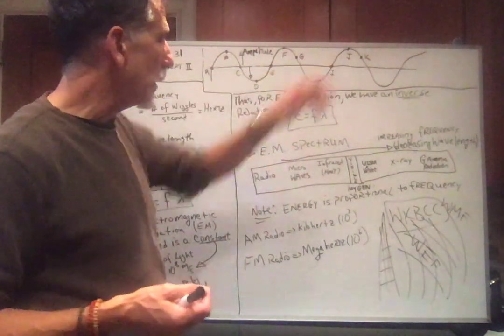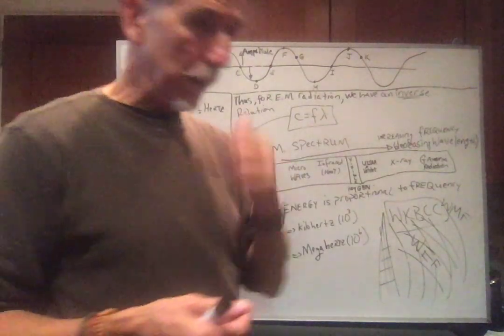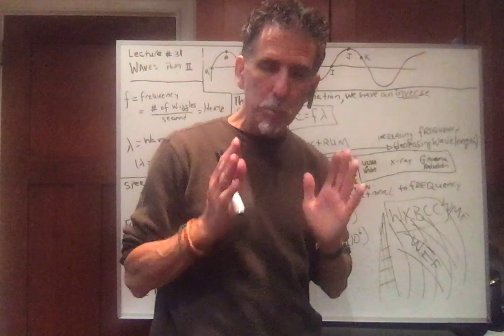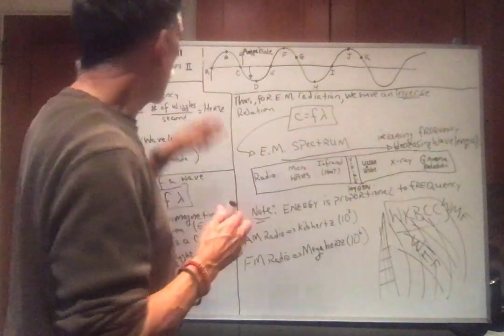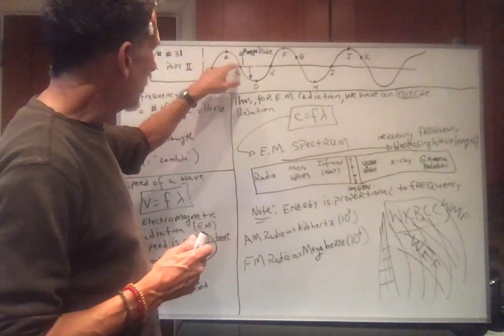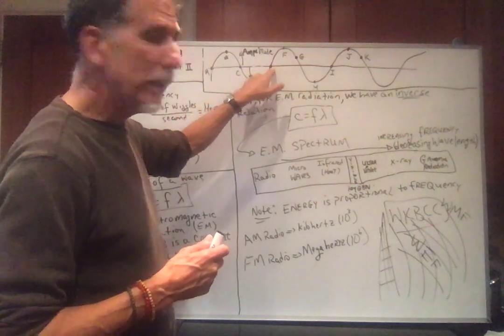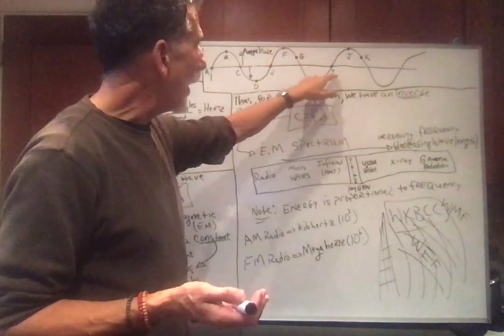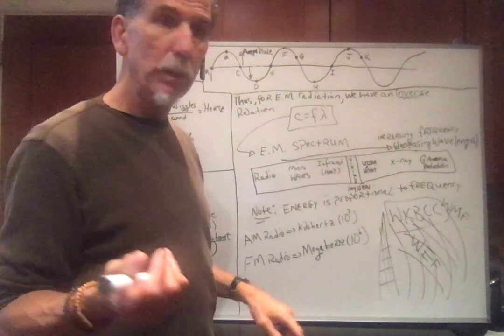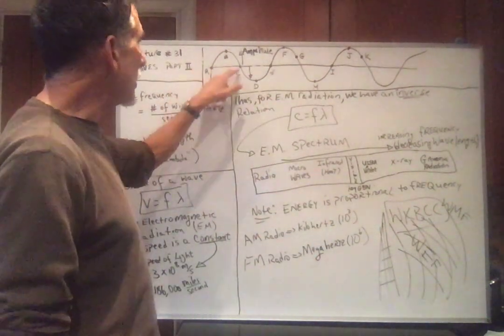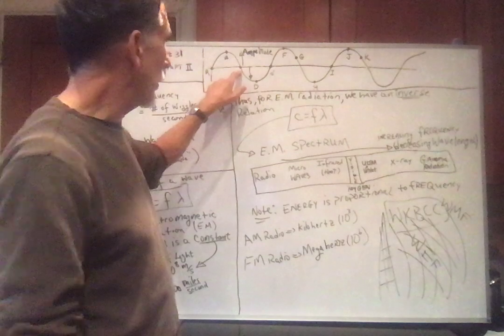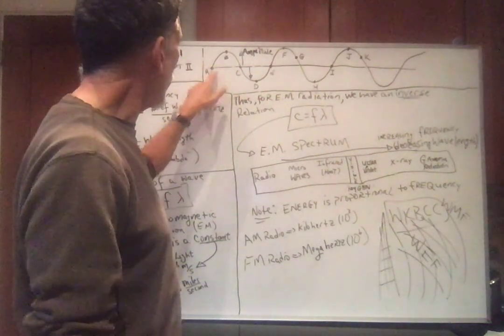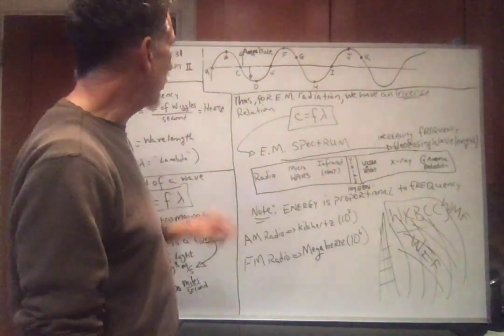And I put letters A, B, C, D, et cetera to talk about wavelength. So wavelength is the minimum repeated distance of a wave, the minimum repeated distance. So if I look at A, go up, go down, go up, A to E is one wavelength. Go up, go down, A to I is two wavelengths. A to C is half a wavelength. A to D looks like three-fourths of a wavelength. A to B is one-fourth of a wavelength.